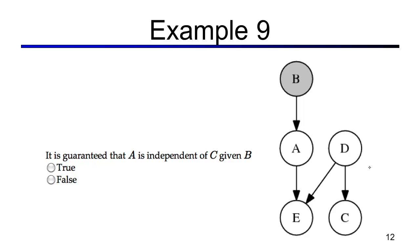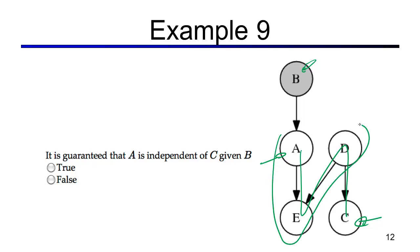Now we're interested in a and c given b. There's just one path connecting a and c, consisting of two triples. The first triple is a V-structure with no evidence in the common effect or its descendants, so it's inactive. Once a triple along the path is inactive, the path is inactive. This is the only path, so all paths connecting a and c are inactive, which means a and c are independent given b.